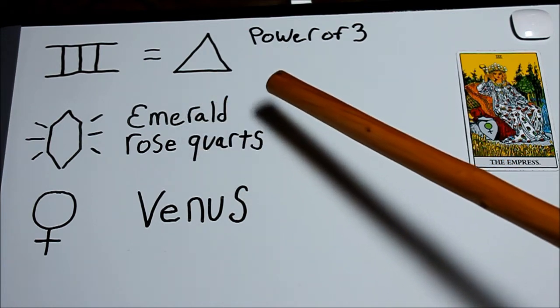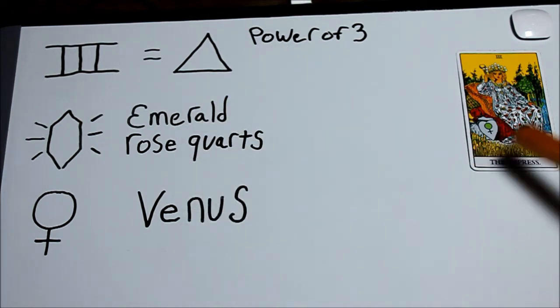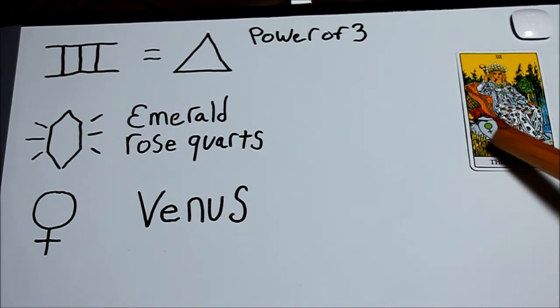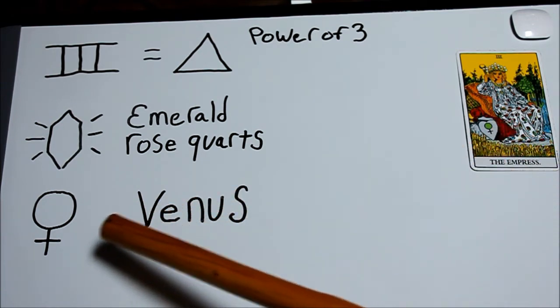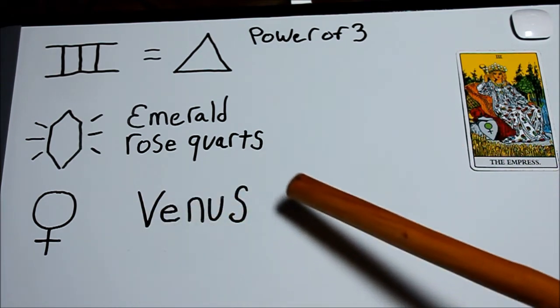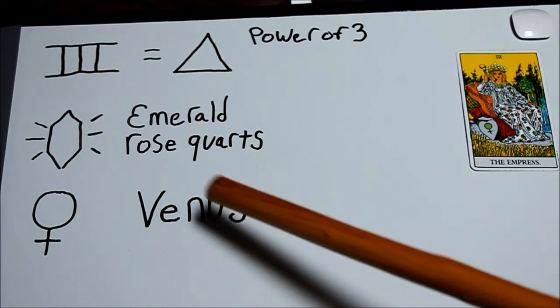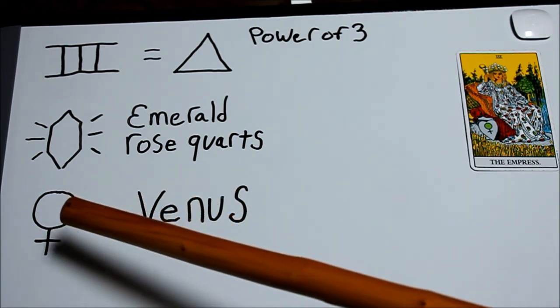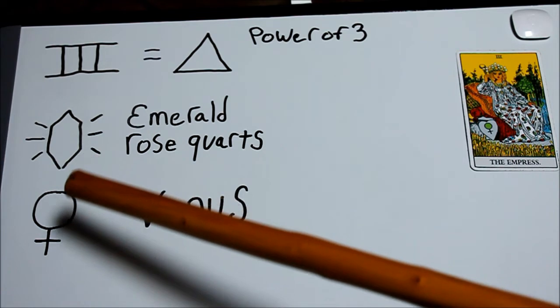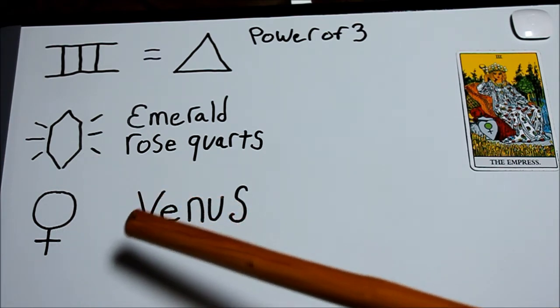You'll see here is the symbol of Venus. Venus represents love and harmony. Look at the sign - it's a circle with a cross. The circle represents spirit and the cross represents matter.